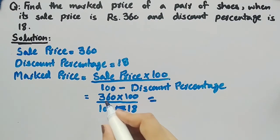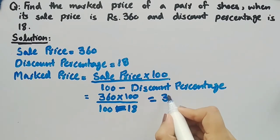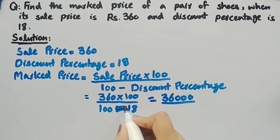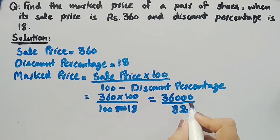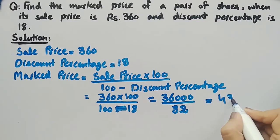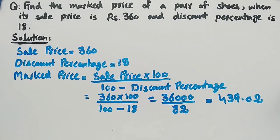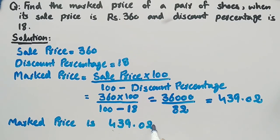It is equal to 360 multiplied by 100, which is 36,000, divided by 100 minus 18, which is 82. When we divide 36,000 by 82, we get 439.02, which means that the marked price is Rs. 439.02.